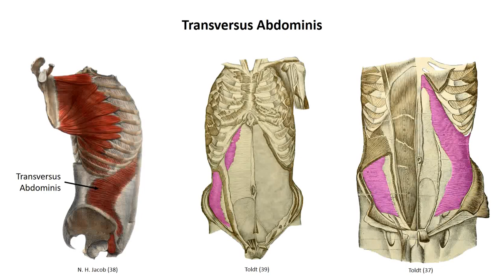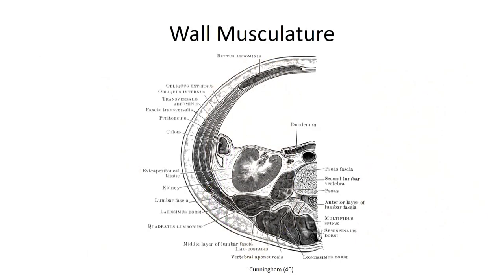Beneath the transversus abdominis is one final fascial layer — the transversalis fascia — which is the deepest part of the anterolateral abdominal wall. Superiorly, it blends with the fascia covering the undersurface of the diaphragm. Engagement of the internal obliques and transversus abdominis is at the heart of core exercises. These muscles fuse with the thoracolumbar fascia surrounding the erector spinae, and by engaging them, tension is generated in the thoracolumbar fascia to provide support to the erector spinae, helping to avoid back strains during heavy lifting. There is evidence that core training is associated with lower risks of back injury.